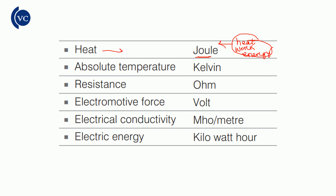Absolute temperature — the unit is Kelvin. Celsius and Fahrenheit are other temperature scales, but the SI unit for temperature is Kelvin.